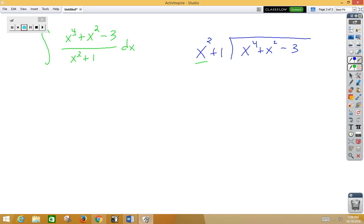So again, we're thinking, what do we need to multiply x squared by to get an x to the fourth? Well, that would be of course x squared. We then need to distribute the x squared to both places. That gives us x to the fourth plus x squared. We need to subtract, distribute our negative.